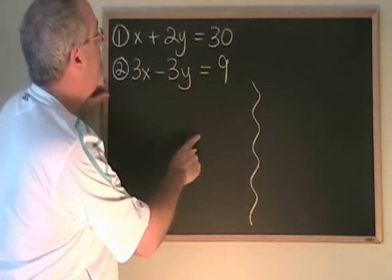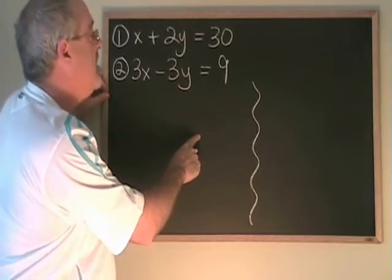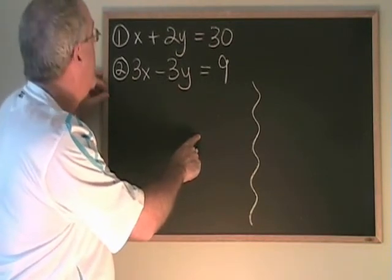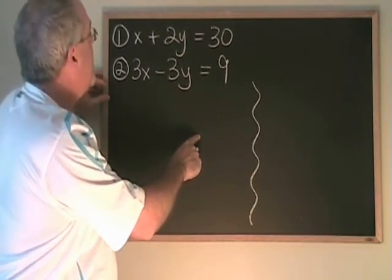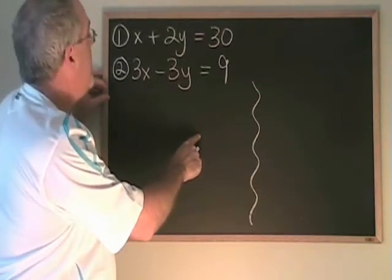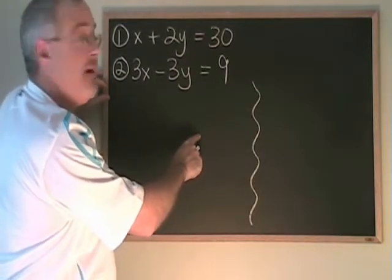We have x plus 2y equals 30, and 3x minus 3y equals 9. In order to make x equal and opposite, the easiest thing I can think of to do is to multiply the top equation by negative 3.